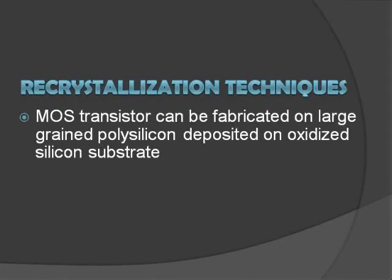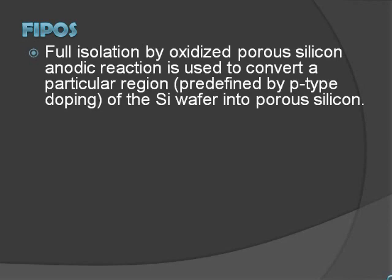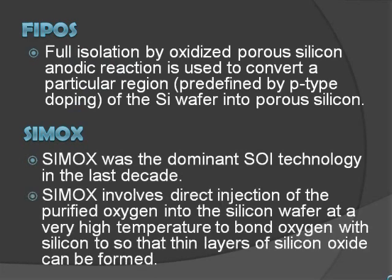We also have the recrystallization technique, where most transistors can be fabricated on large-grain polysilicon deposited on an oxidized silicon substrate. Other than that, we have FIPOS — full isolation by oxidized porous silicon — where an anodic reaction is used to convert a particular region of the silicon wafer into porous silicon. Besides that, there is the SIMOX technique, which involves direct injection of purified oxygen into the silicon wafer at a very high temperature to bond oxygen with silicon so that thin layers of silicon oxide can be formed.